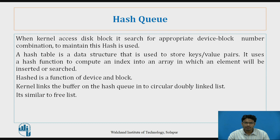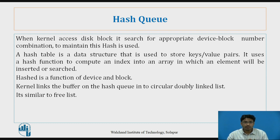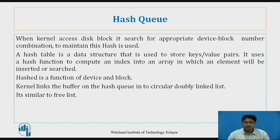Now if we have thousands of buffers in our system, how are we going to manage this? If we create one queue maintaining buffers 1, 2, 3 up to 1000, and we want to access buffer number 1000, we need to compare that data block with each buffer, which takes 1000 comparisons. The complexity is too high. To optimize the searching, we use the hash queue, applying hashing techniques.